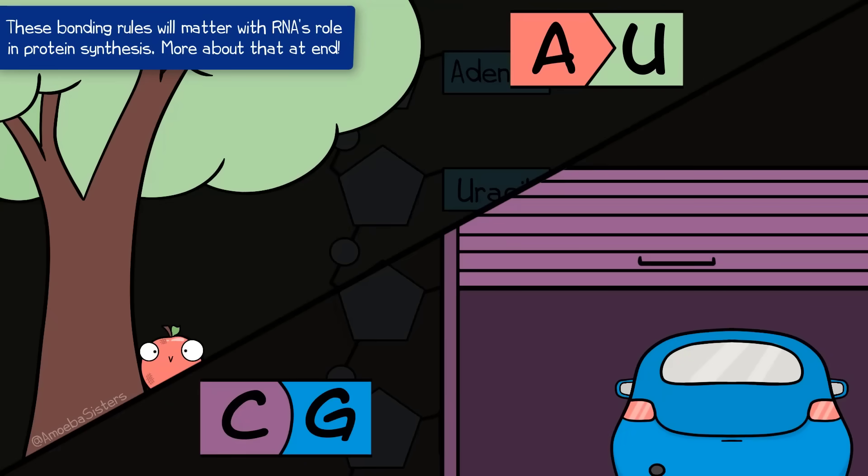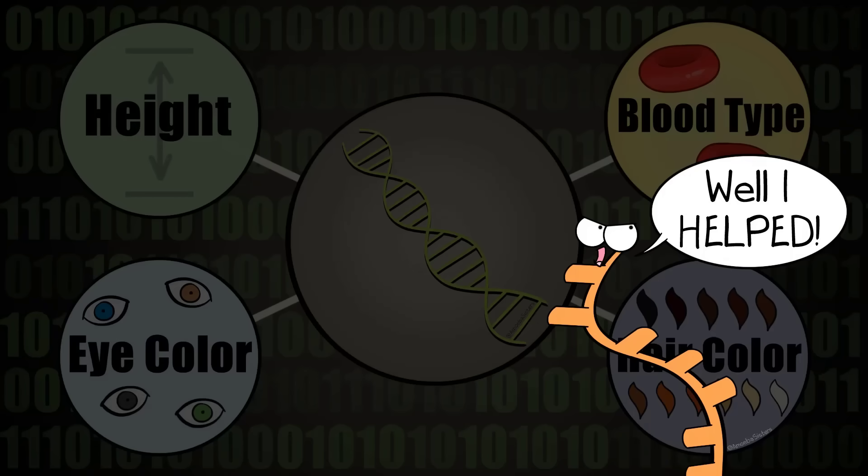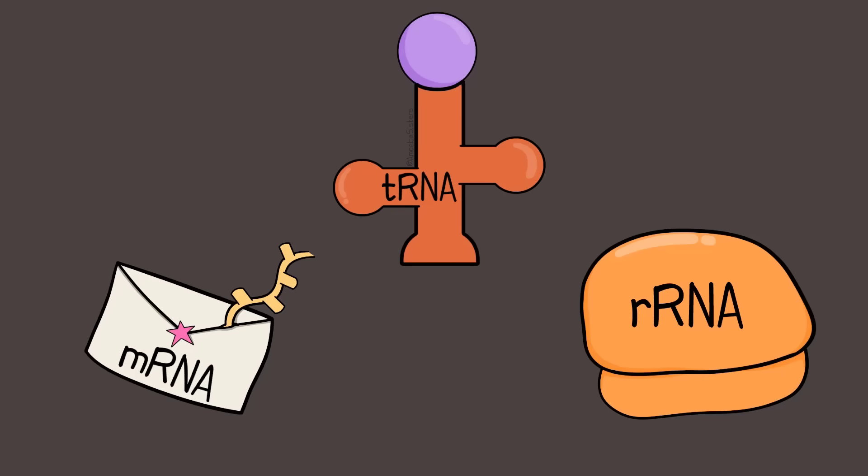We mentioned earlier that DNA codes for your traits, but it couldn't do that without RNA's help. In our protein synthesis video, we talk about three different types of RNA and their very important roles.